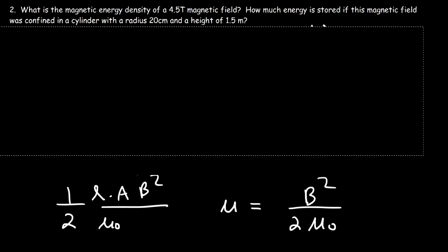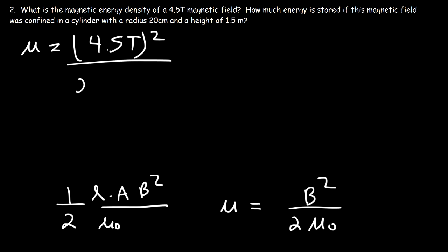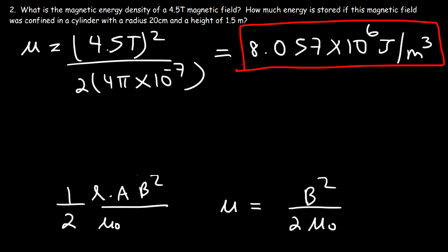Let's use that formula to calculate the magnetic energy density for a 4.5 tesla field. It's going to be B squared — that's 4.5 tesla squared — divided by 2 times mu zero, which is 4π times 10 to the minus 7. You should get a large number: 8.057 times 10 to the 6 joules per cubic meter. That's the magnetic energy density of the field.